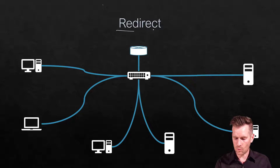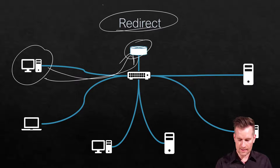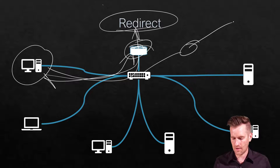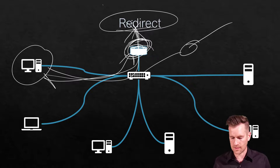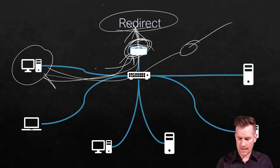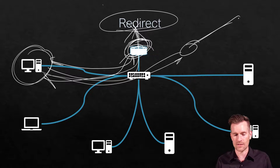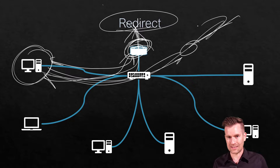Then we have redirects. A machine may get its routing information from a router to get out via one device, but perhaps there are multiple devices with connections to the Internet and one connection goes down. That router no longer has a connection to the outside world. What can happen is a redirect can be sent to that machine so it can get information to go out the other route. A redirect just reroutes the traffic — if something goes down, redirects can be used to redirect traffic to a different destination.